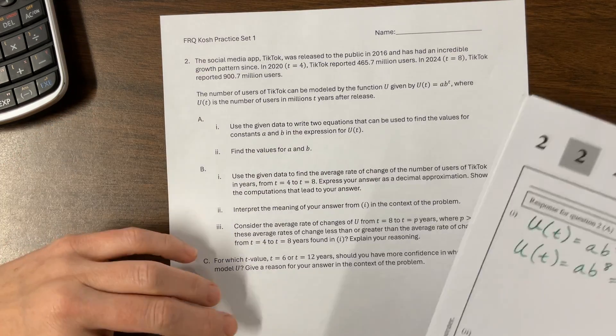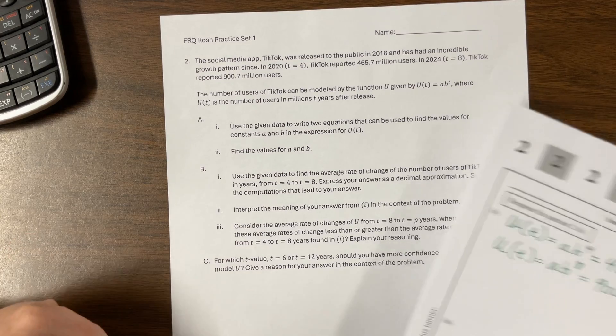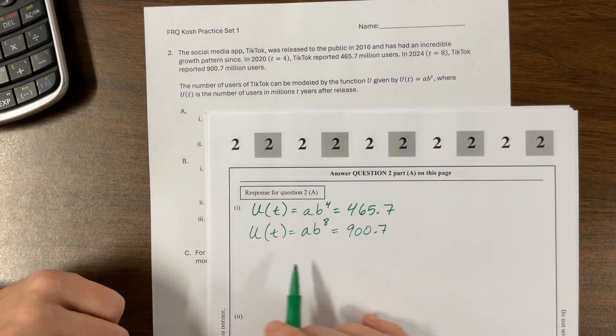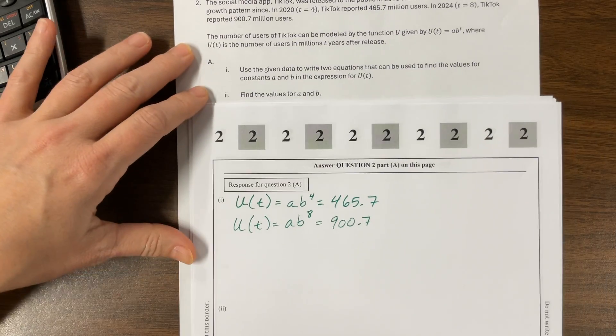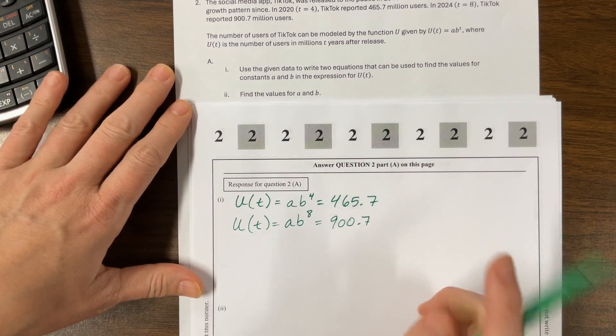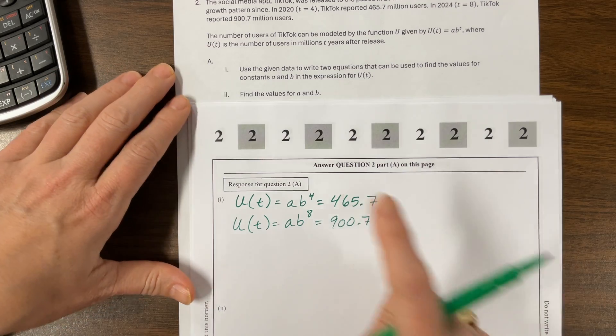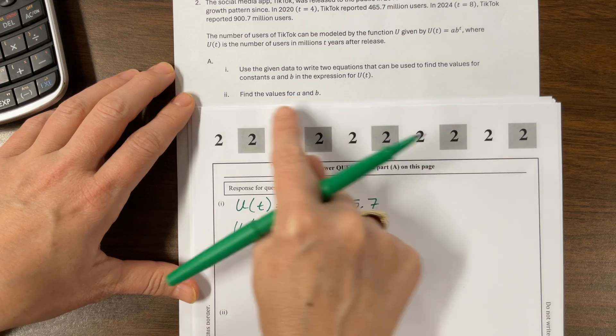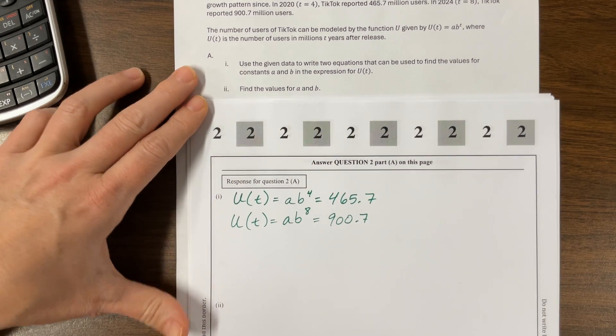Then we can also say U(T) would be equal to A times B to the eighth. Eight years later, there are going to be 900.7 million users. I personally avoid TikTok, but too much of my life has already been spent on other forms of social media.